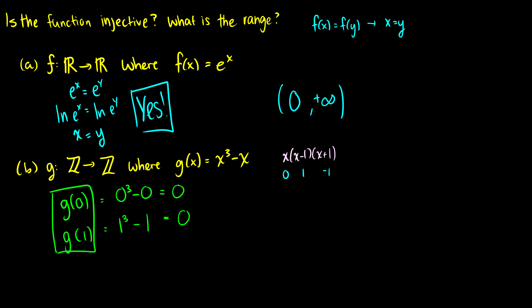So we know that g(0) and g(1) are equal to each other, therefore we have two elements in the domain mapping to the same element in the codomain, therefore it is not injective.